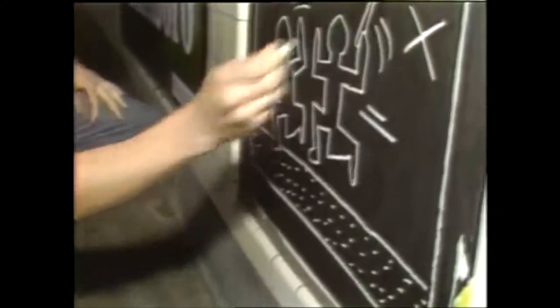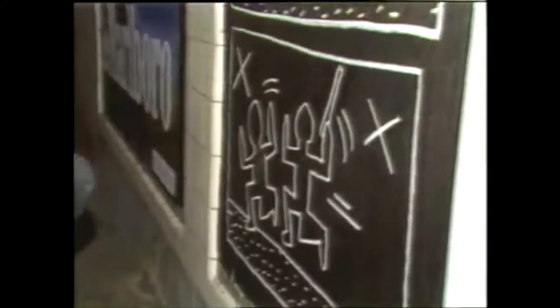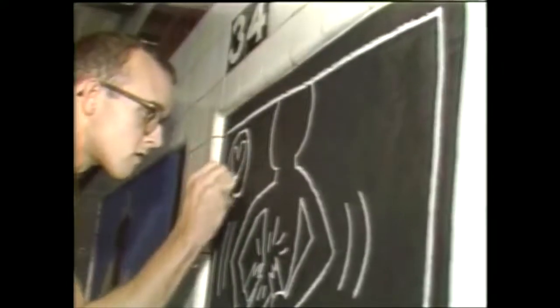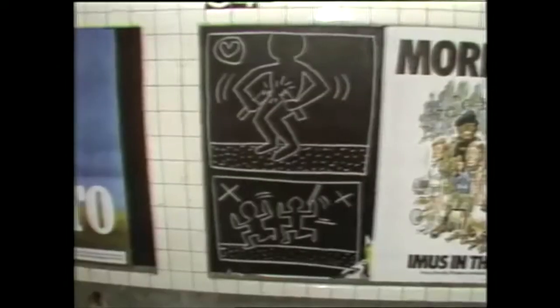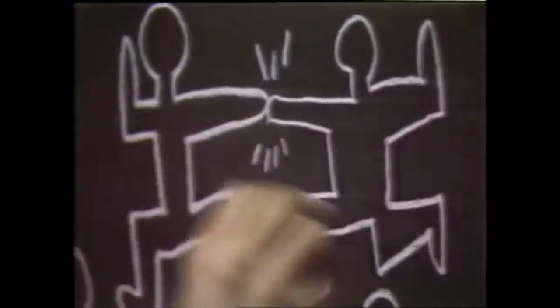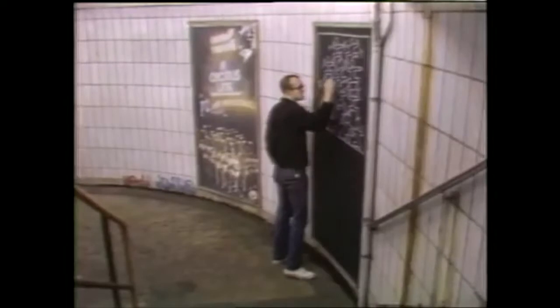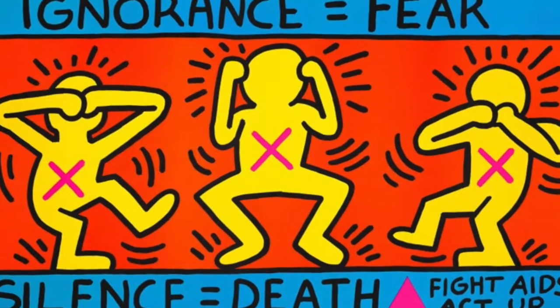We'd also like to highlight the works of Keith Haring, who made easily reproducible and simply stated lithographic prints from 1989, addressing themes of justice, social protest, and equality. His most famous is the "Ignorance = Fear" and "Silence = Death" poster.